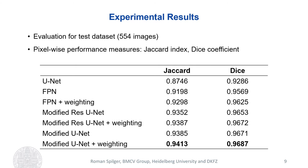We performed a quantitative evaluation for 554 live cell microscopy images of Bacillus subtilis. As pixel-wise performance measures, we use the Dice coefficient as well as the intersection over union, also known as the Jaccard index. We compare the feature pyramid network, the modified Res-U-Net, and the modified U-Net without and with shape-based weighting of the loss function. It can be seen that for all network structures the proposed weighting scheme improves the result. The best result is obtained by the modified U-Net, which performs much better than the original U-Net.